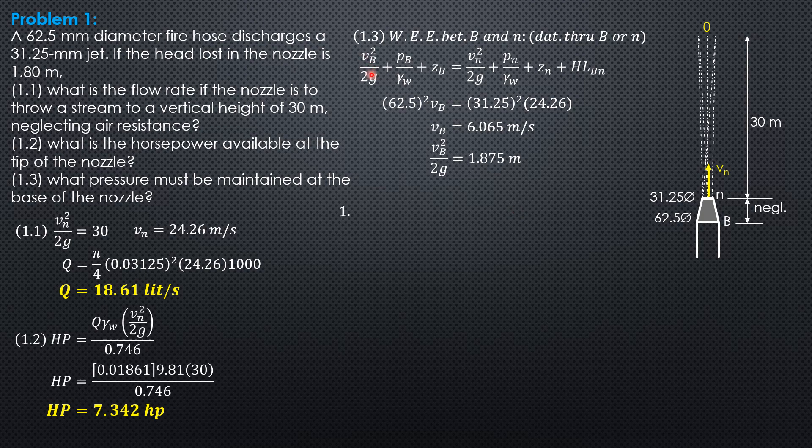Substitute into this equation: 1.875 plus pressure B over 9.81 plus 0 equals 30 plus 0 plus 0 plus 1.8. In this last equation, only P sub B is the unknown, then we can compute it equal to 293.6 kilopascals.